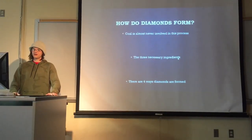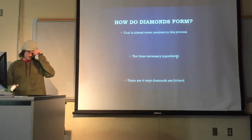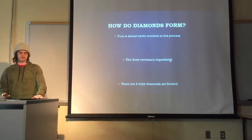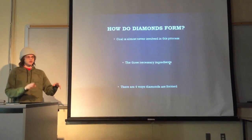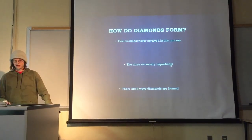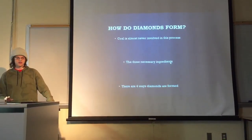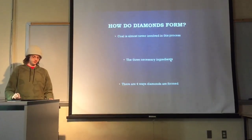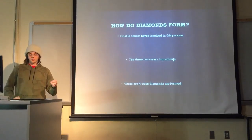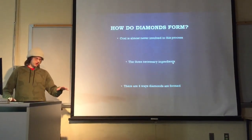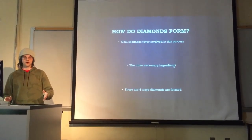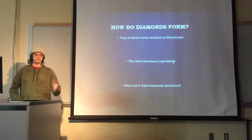Let's talk about how diamonds are formed. A lot of people think coal is a big part of the diamond-creating process, but the truth is they're almost never involved, because coal is a by-product of plant life and diamonds have been around a lot longer than plants have. There are three necessary ingredients to create diamonds: a carbon substance, heat, and pressure. Diamonds form usually 90 miles under the earth's surface, reaching about 2,000 degrees Fahrenheit — the perfect conditions for diamonds to be made.